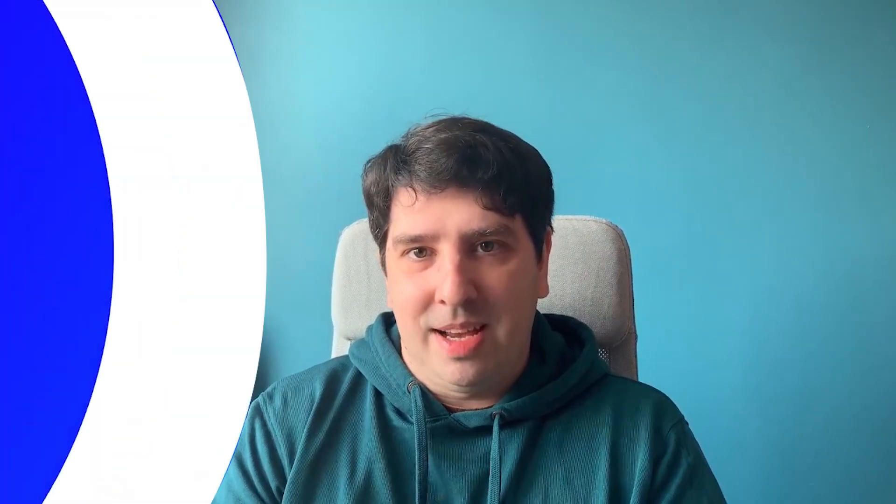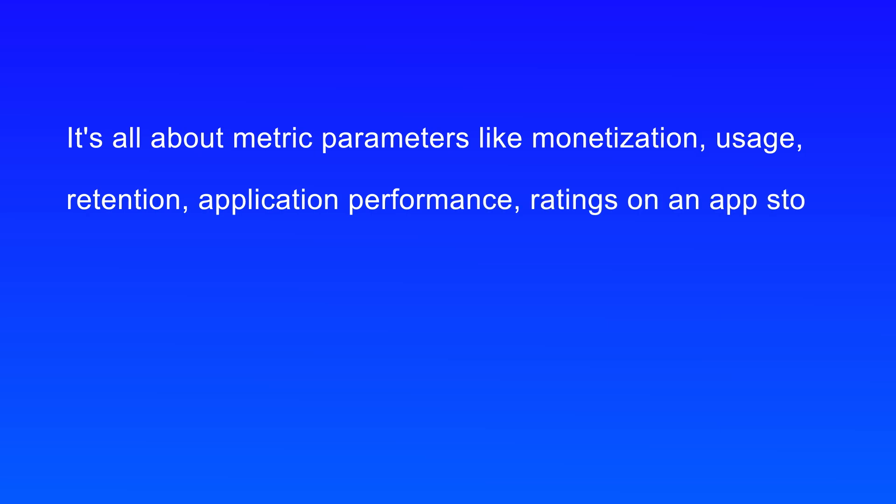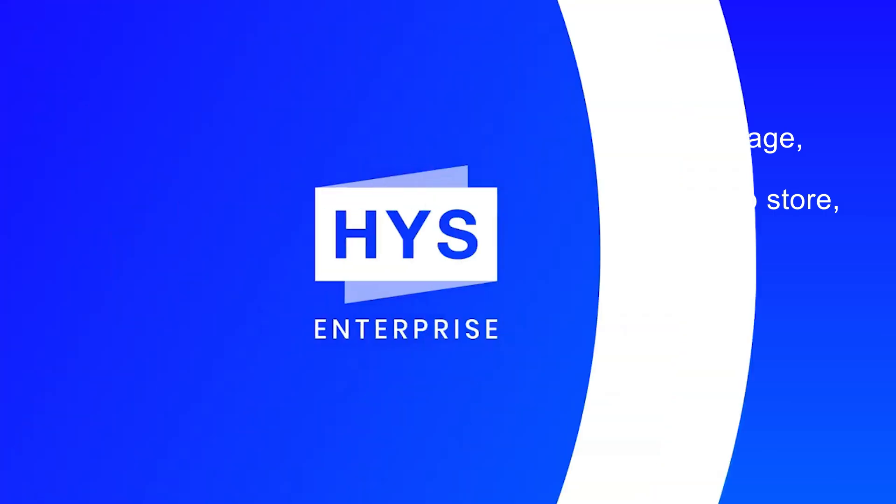First of all, it's really important to define if the product is aligned with business goals — if it is, then it's already successful. After that, it's all about metric parameters like monetization, usage, retention, performance of the application, App Store ratings, and user engagement — how users continue to use the product and whether new users come over time. If you want to stay competitive and have a healthy application, you have to work with these metrics and do what's needed to improve them.